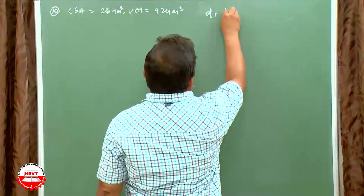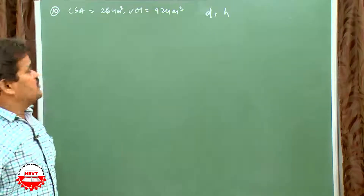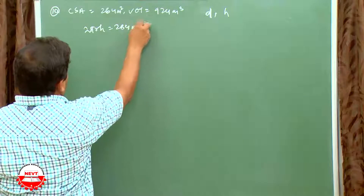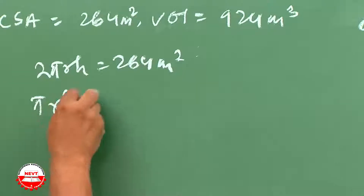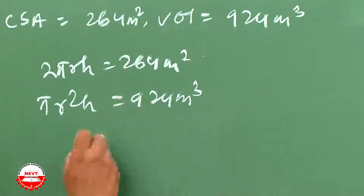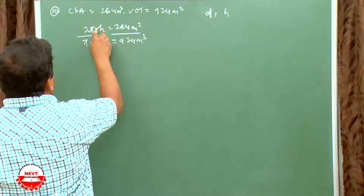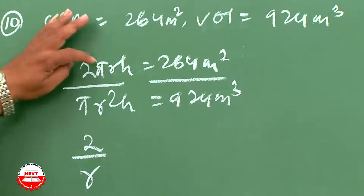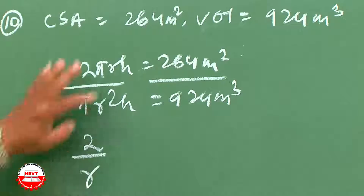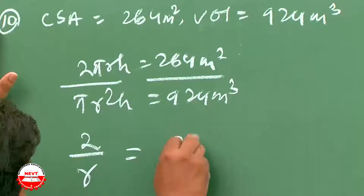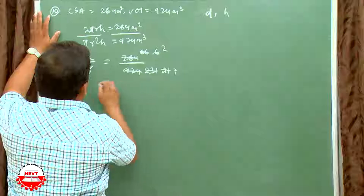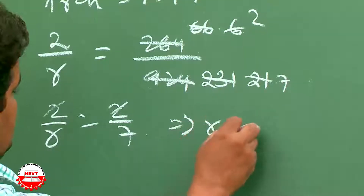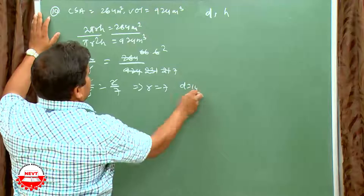Important question: the curved surface area of a cylindrical pillar is 264 m² and its volume is 924 m³. Find the diameter and height. So 2πrh = 264 and πr²h = 924. Dividing: (2πrh)/(πr²h) = 264/924, giving 2/r = 264/924. Simplifying by dividing by 4: 2/r = 2/7.